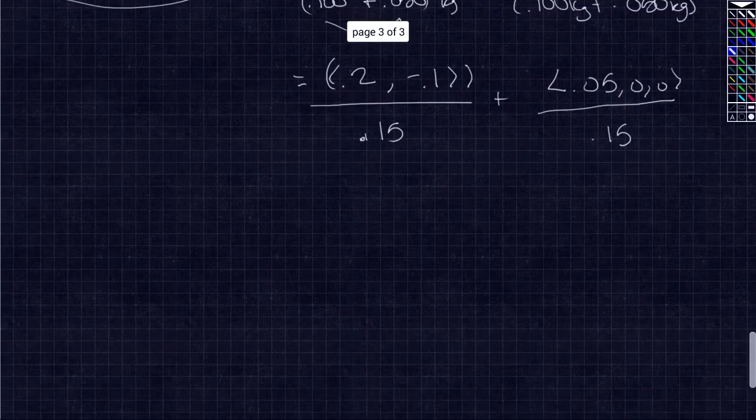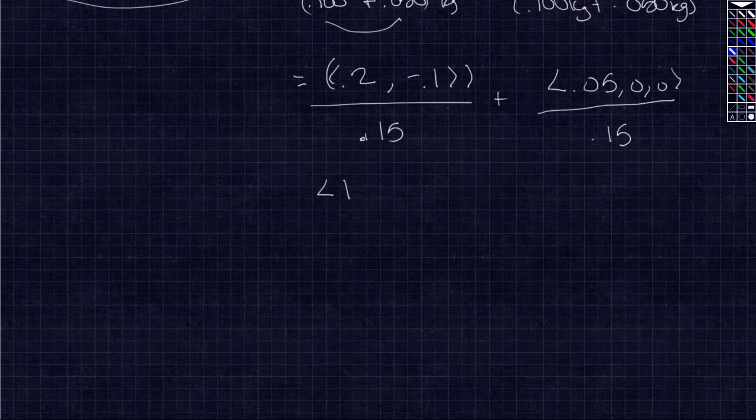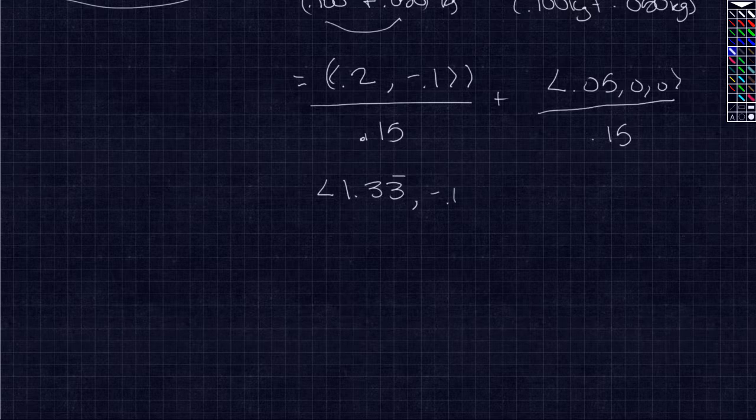When divided, we get 1.33 with a remainder and negative 0.66, which is going to be added to Pug B, giving us negative 0.33 with a remainder.